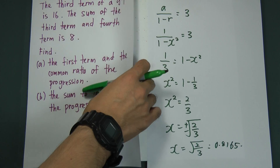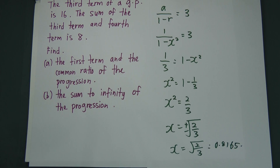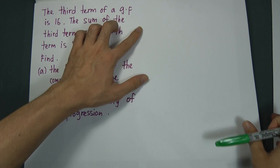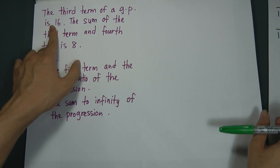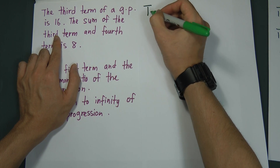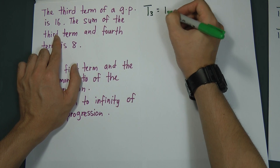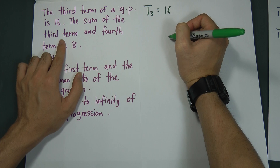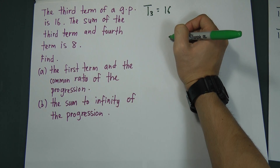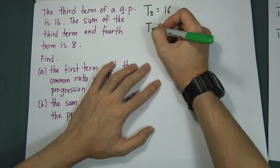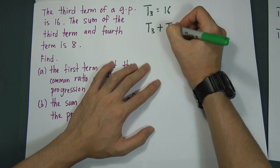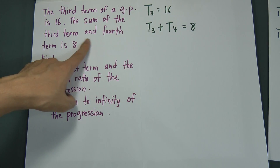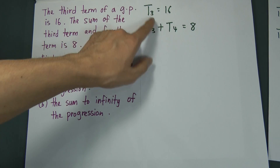Let's look at a slightly harder question. The third term of a geometric progression is 16, so T3 equals 16. And the sum of the third term and the fourth term is 8, so T3 plus T4 equals 8.